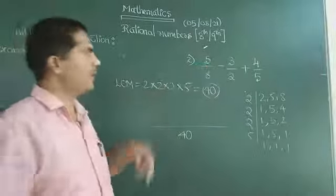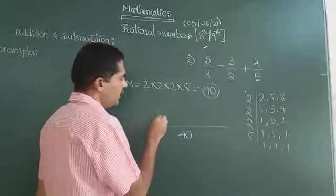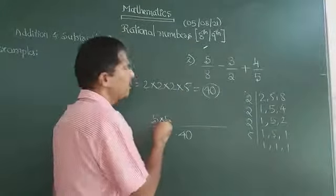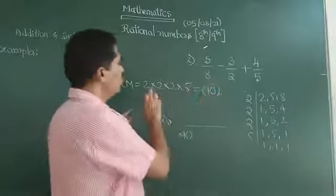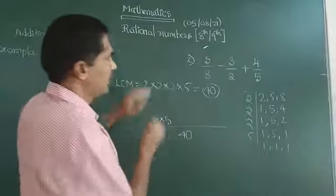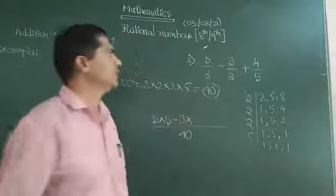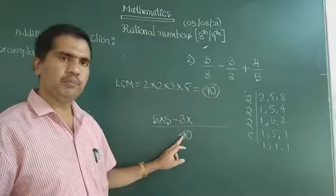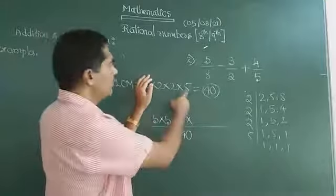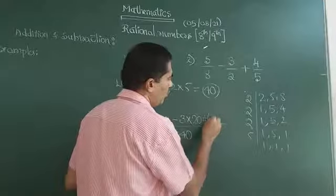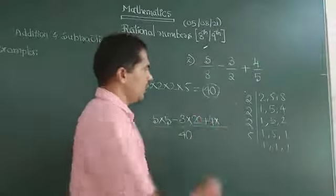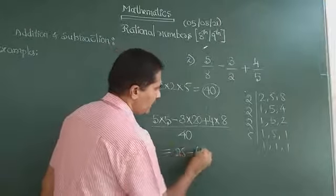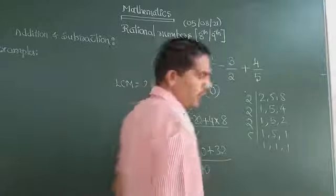Next I will continue with the fraction. First fraction, 5 is the numerator, written into denominator. Observe, 8 times 5 is 40, so multiply by 5. Minus 3 into, denominator is 2, 2 times 20 is 40, so multiply by 20. Plus 4 into, 5 is the denominator, 5 times 8 is 40, so multiply by 8. 25 minus 60 plus 32 divided by 40.